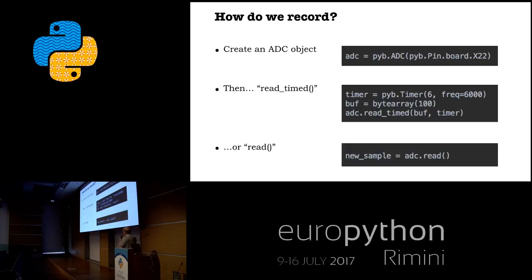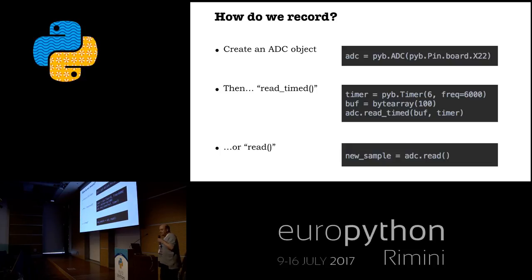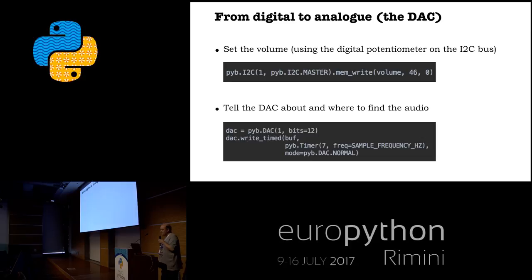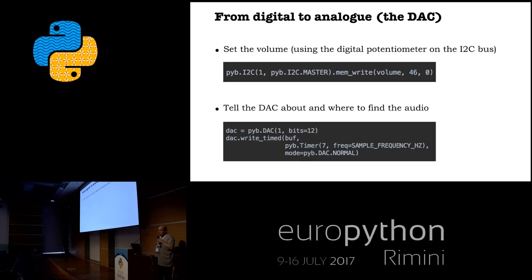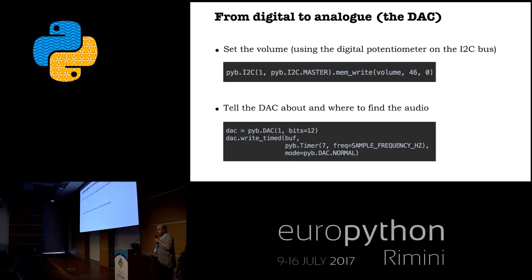In my particular case, I'm forced to read the ADC samples manually, and it's my responsibility to record them at a designated rate. For replay, we use a digital-to-analog converter — and there's one of those on the board. It's quite simple to set up. There are two parts to the DAC: you need to set the volume via a potentiometer on the I2C bus, and once you've set the volume, you just provide the DAC with your data buffer and it will play it back.